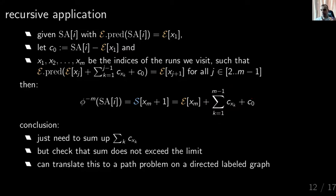The key takeaway is that you just need to sum up the C costs, because everything else is given — you have already sampled S and E and you know the costs. So it's just arithmetic computation. But for each step, whenever you visit a new run, you have to check that the accumulated sum of costs does not exceed the limit.